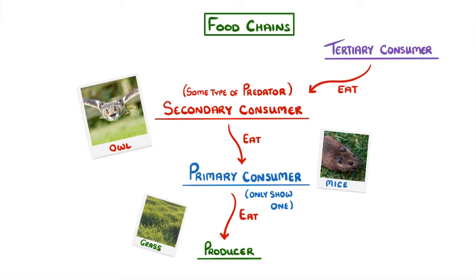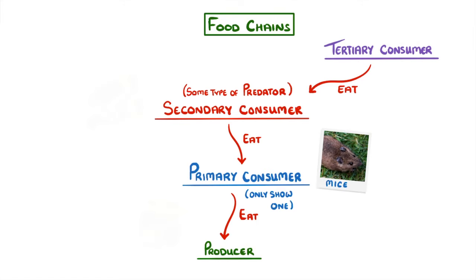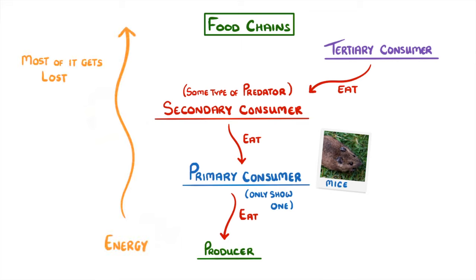Something really important to remember with food chains is that as energy gets passed up the different levels, most of it gets lost. For example, if there were 1000 joules of energy in the grass, then only around 100 joules or so might be passed on to the mice, and only around 20 joules might be passed on to the owl.